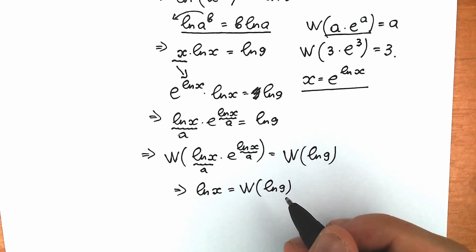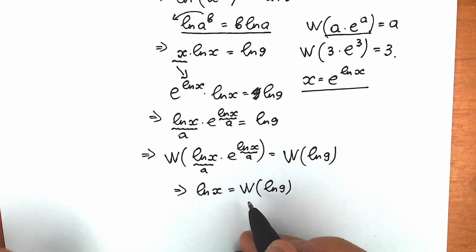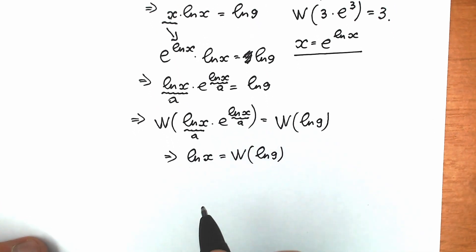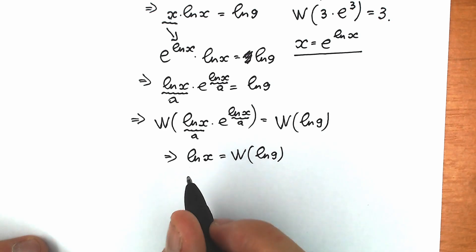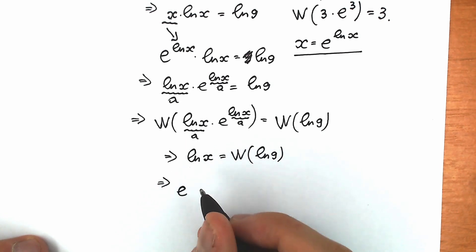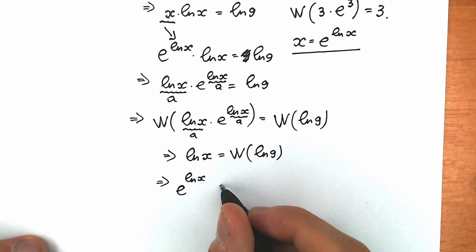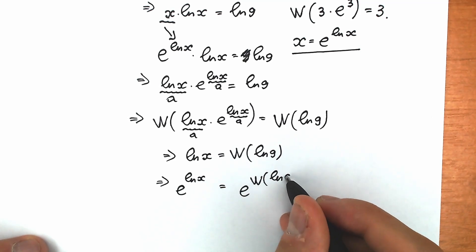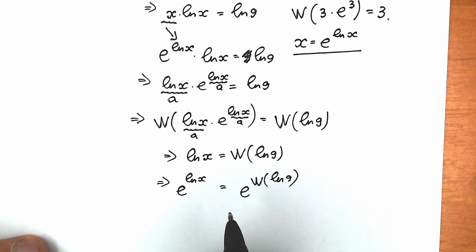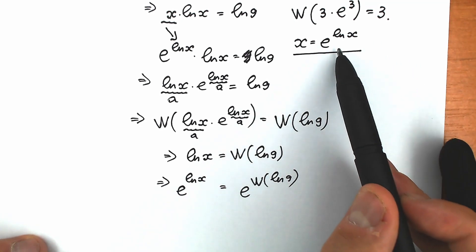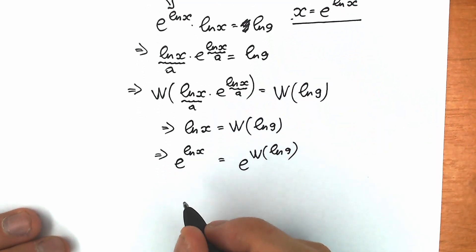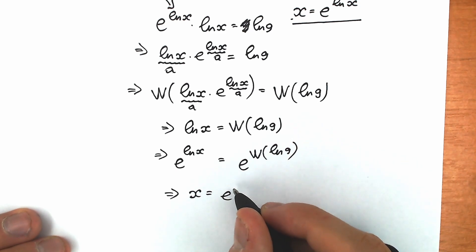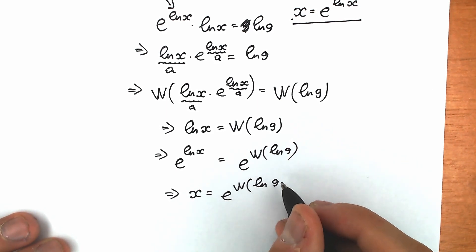Now the final tricky move — we need to find x. Let's create a base of e on both sides. On the left side, e to the power natural log x; on the right side, e to the power Lambert W of natural log 9. Since e to the power natural log x equals x, our answer is x equals e to the power Lambert W of natural log 9.